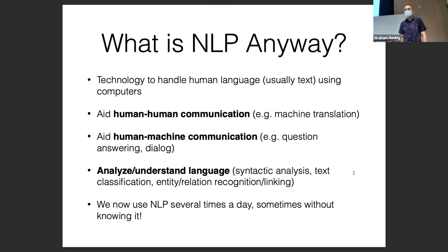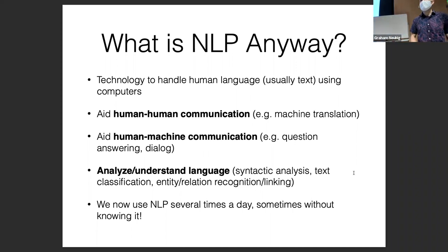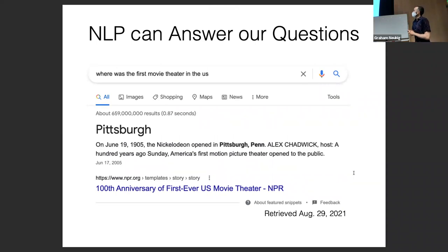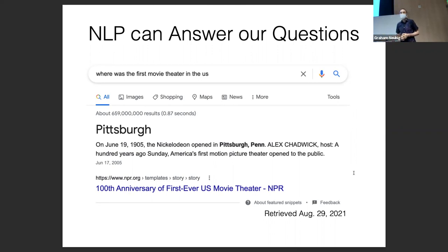If you use a search engine, for example — I talk to my home assistant to ask it the weather and just about nothing else every day. Sometimes I ask it to play music. Those are the two most common queries people use these things for, but it can also do relatively complicated things like question answering. I use machine translation some of the time. It's really amazing over the past several years what we're able to do now. So NLP can answer questions: I type something like 'where was the first movie theater in the US?' into a search box, and it gives you an answer — it says Pittsburgh, which is right.